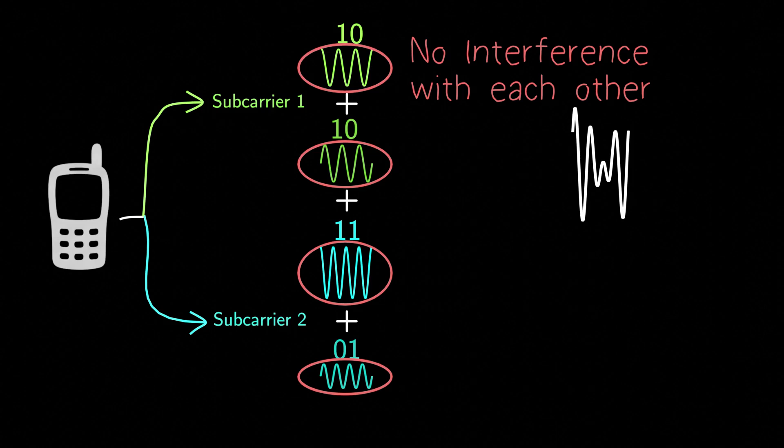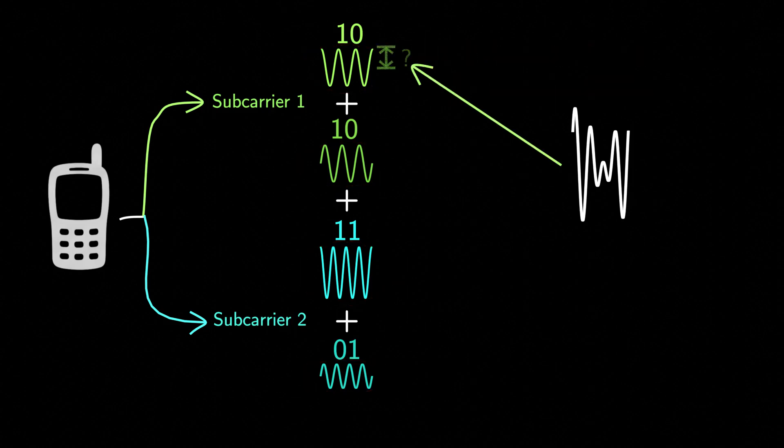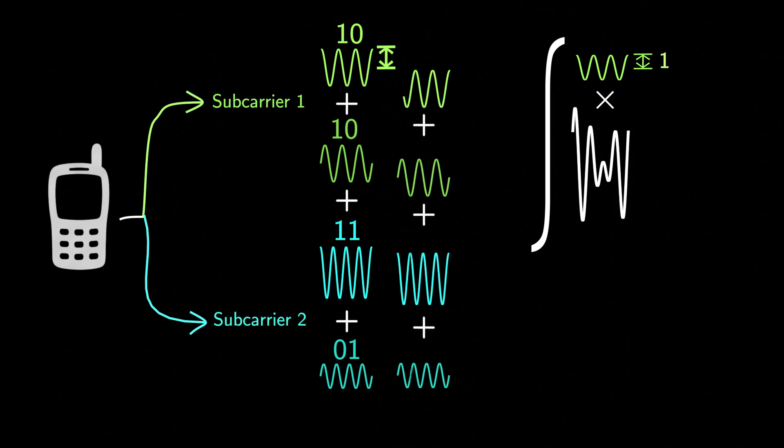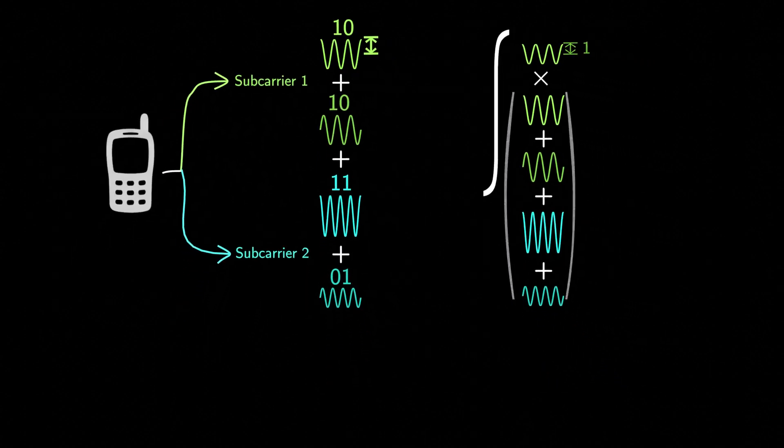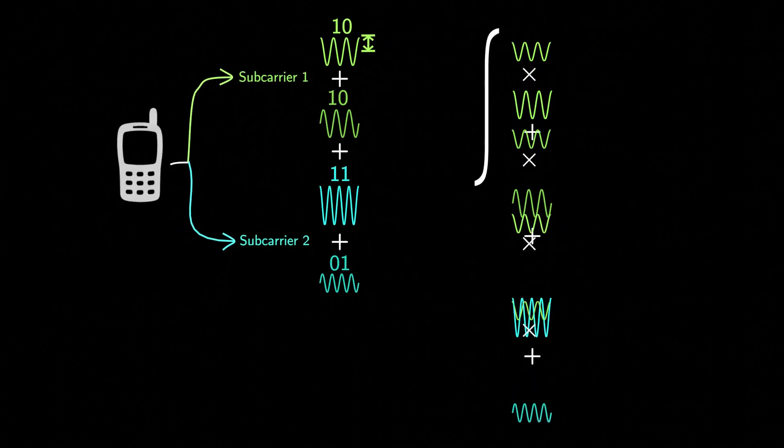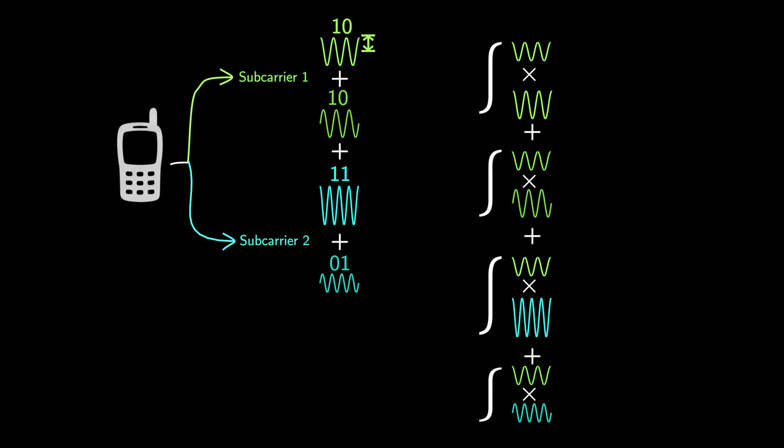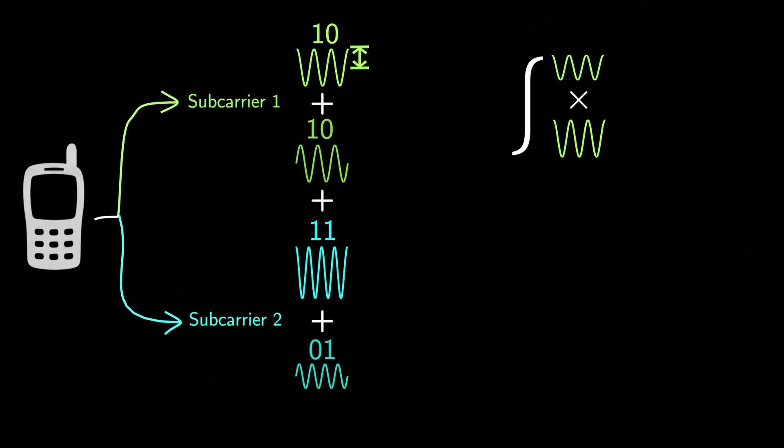Suppose our receiver wants to figure out the amplitude of the transmitted cos wave of the first subcarrier. To find out that amplitude, the receiver multiplies the entire received signal by the same cos wave with unit amplitude, then integrates the result. And here's the magic. Thanks to orthogonality, when you do this multiplication and integration, the contributions from all the other subcarriers just vanish. They mathematically cancel out to zero. You're left with the amplitude that was proportional to the amplitude of the transmitted wave you were interested in.